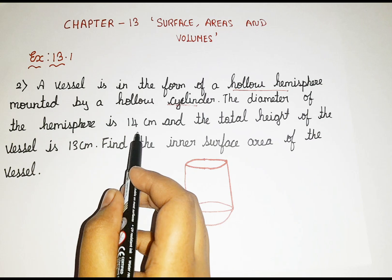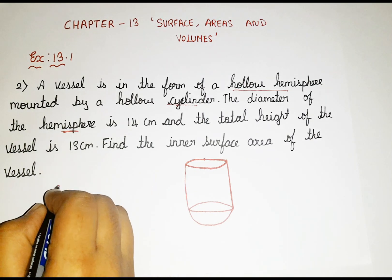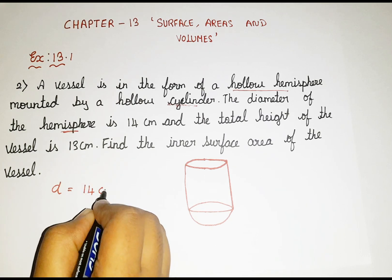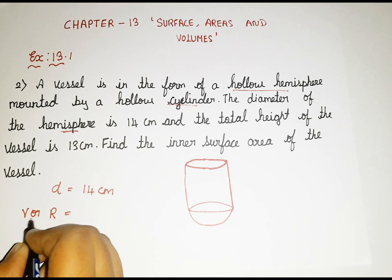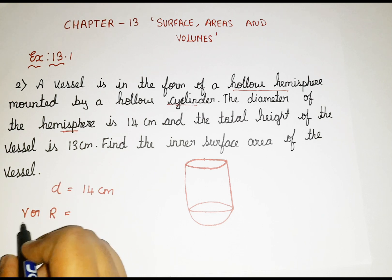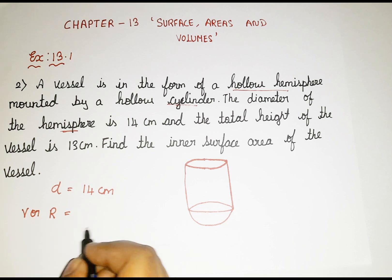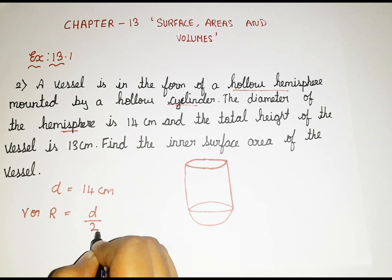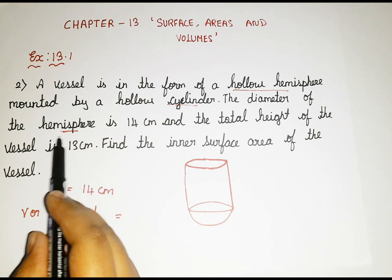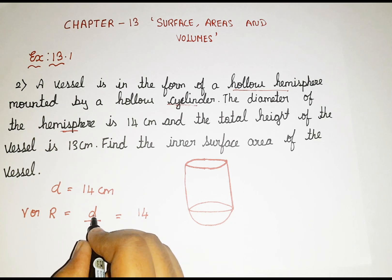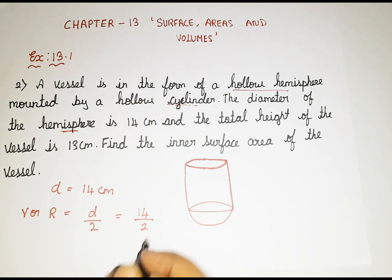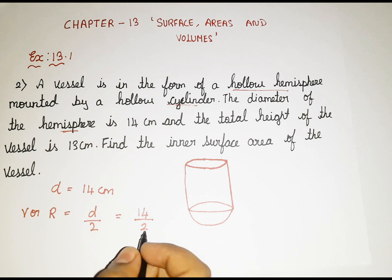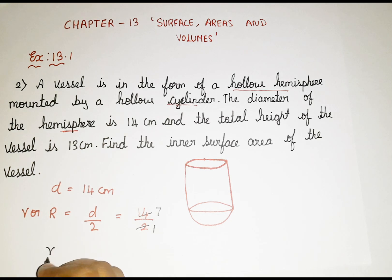The diameter of the hemisphere is 14 centimetre. So diameter D is equal to 14 centimetre. How to find radius? Radius R equals D by 2, that is 14 by 2, which gives us 7. So the radius is 7 centimetre. The diameter is the complete line; radius is half of the line. So here the radius is 7 centimetre.